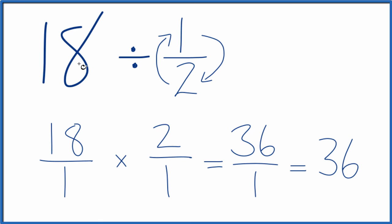So in answer to our question, 18 divided by 1 half, that's 36. If you took 36 and multiplied it by 1 half, you get 18. So we did this part correctly.